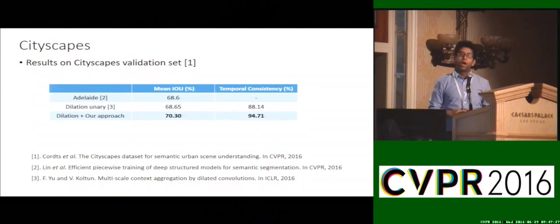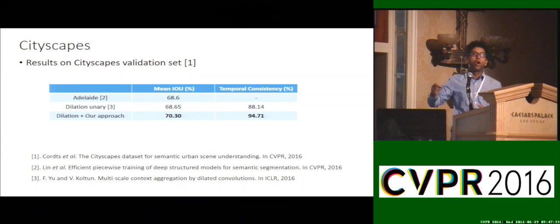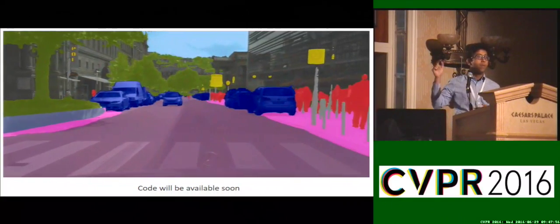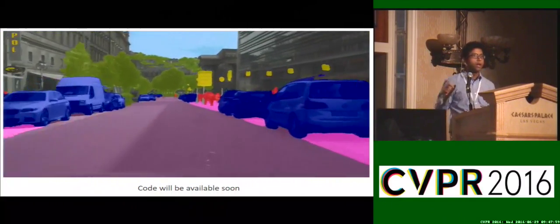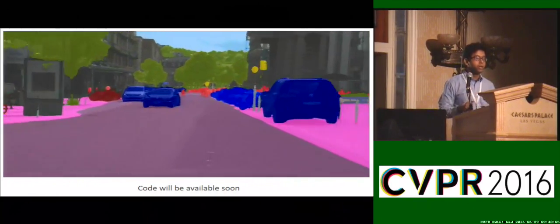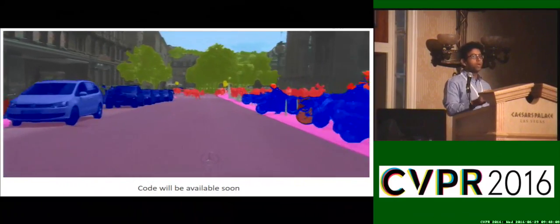Since our submission, we also have a new dataset called Cityscapes. We have evaluated our method on this new dataset. On the Cityscapes validation set, our method improves upon state-of-the-art single image semantic segmentation methods with big improvements in temporal consistency. This is the demo video of Cityscapes. One small nugget is that this is 2,100 frames, so there are 2.5 billion pixels, and we are doing inference over 2.5 billion pixels.